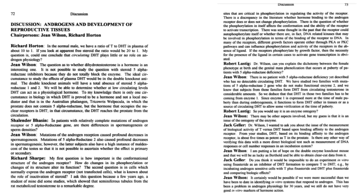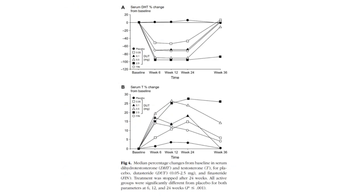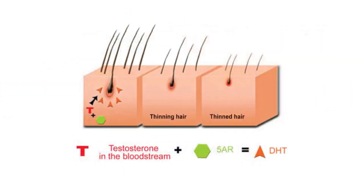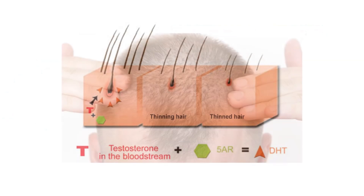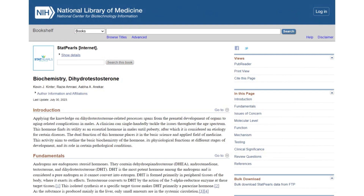While a reduction in serum DHT can suggest that treatments like finasteride or dutasteride are having an effect, it's important to understand that this doesn't fully reflect the reduction of DHT within tissues where these drugs are primarily intended to act. This discrepancy arises because these medications target 5-alpha reductase specifically in tissues rich in this enzyme, such as the prostate and hair follicles. The primary action of these drugs is to prevent the conversion of testosterone to DHT right at the site where this process normally happens, which significantly impacts tissue DHT levels but may not correspondingly influence serum DHT levels to the same extent.